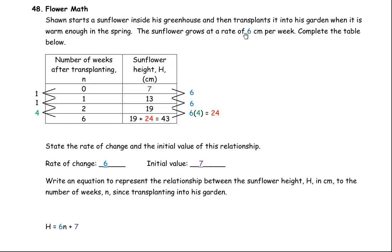So first of all, if it's growing at a rate of 6 cm per week and it's 13 after one week, we would subtract that 6 to get to the height the day he transplanted it from his greenhouse. 13 minus 6 would be 7, so this would be 7 here. That was the initial height, the initial value that you're looking for, and we'll use that in the equation too.